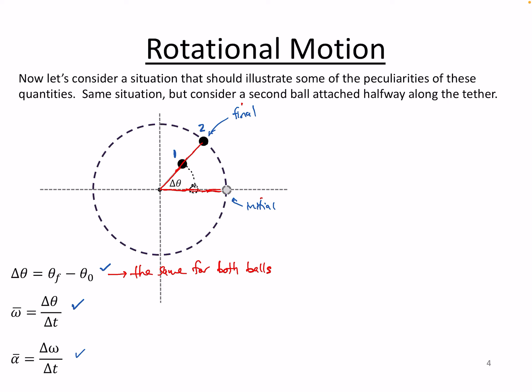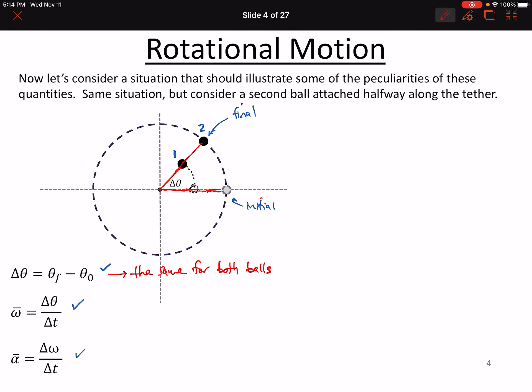However, I think you would also agree that the distance covered by each one of these balls is very different. So ball number two goes along this distance. If you were to measure that out with a tape measure, it would be significantly longer than the distance covered by ball number one.